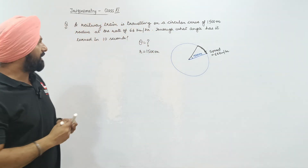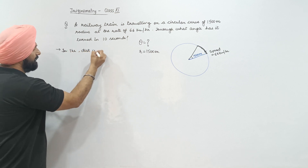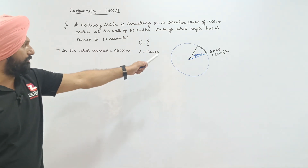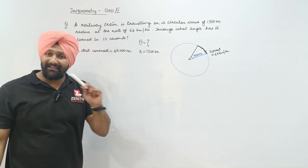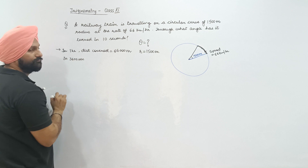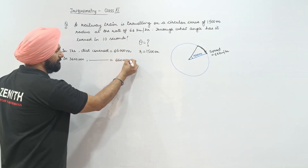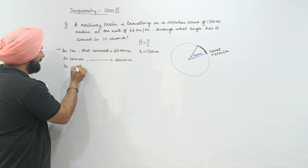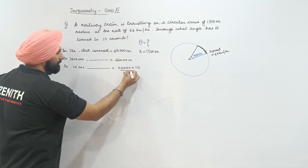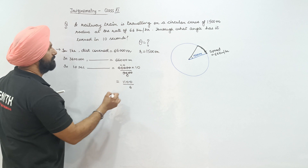Let's write down: in one hour, distance covered is 66,000 meters. In one hour, which is 3600 seconds, distance covered is 66,000 meters. So in 10 seconds, distance covered is 66,000 divided by 3600 multiplied by 10, which equals 1100 upon 6 meters.